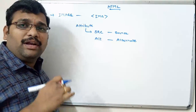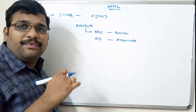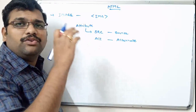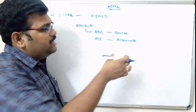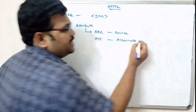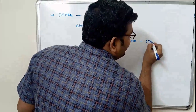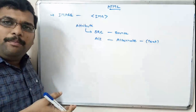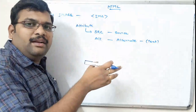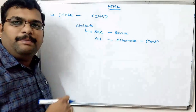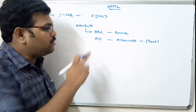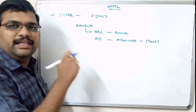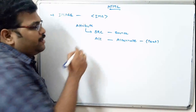Next is alt, that means alternate. Alternate means if in any situation it is difficult to display the image on the browser, it will display this alternate text. So here we have to write the text — if there is any problem displaying the image on the screen, this alternate text will be displayed in the place of the image. For that we use the alt attribute.